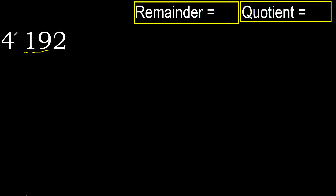With 19, 4 multiplied by which number is nearest to 19 but not greater? 4 multiplied by 5 is 20 — that is greater. 4 multiplied by 4 is 16 — not greater. So 19 minus 16 equals 3.